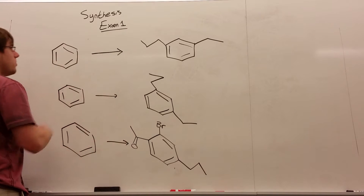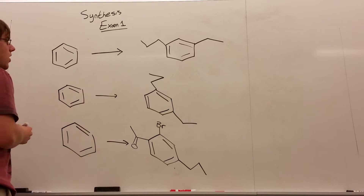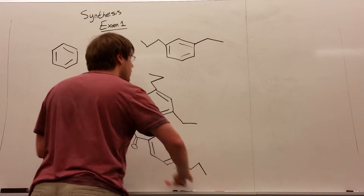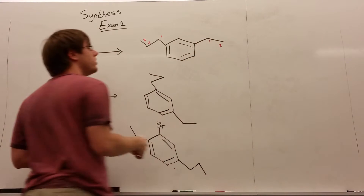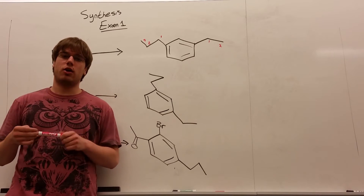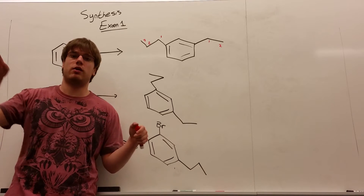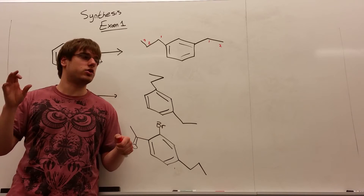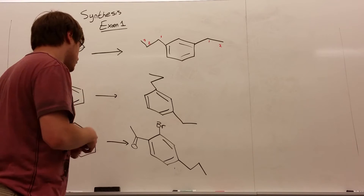Let's start with the first one. This was actually a question from your synthesis on your first exam this semester. We need to add three carbons on the left side and two carbons on the right side. The only reactions we have to add carbons are the Friedel-Crafts acylation and alkylation reactions, where you have a halogen on a carbon chain. You always want to use the reaction with the double bond O.